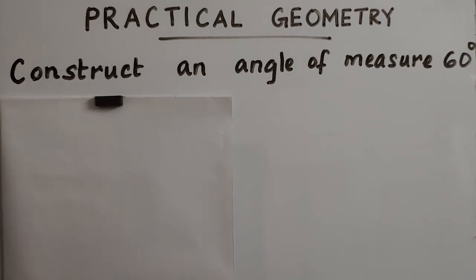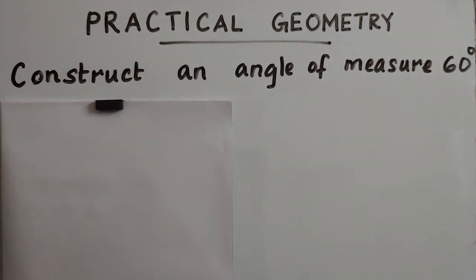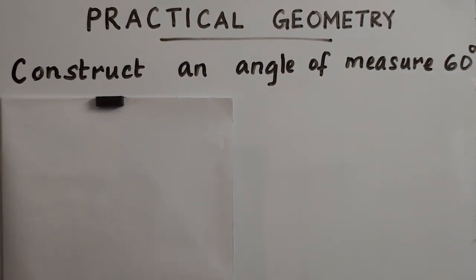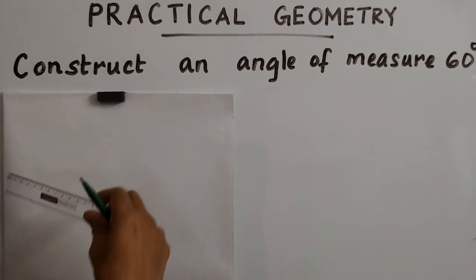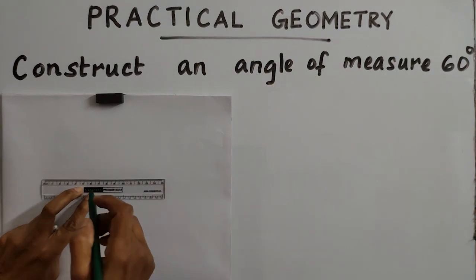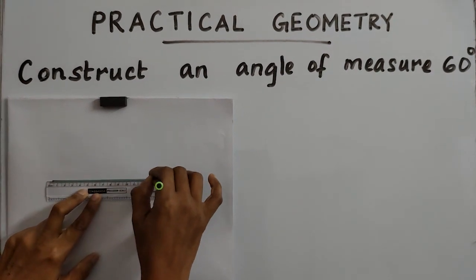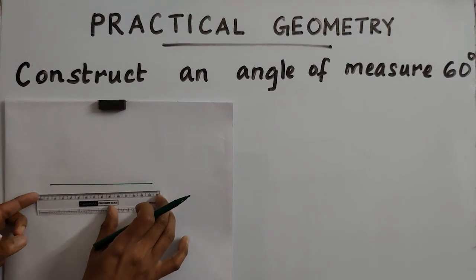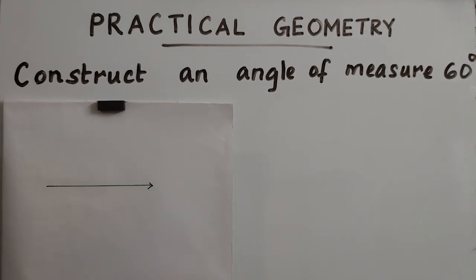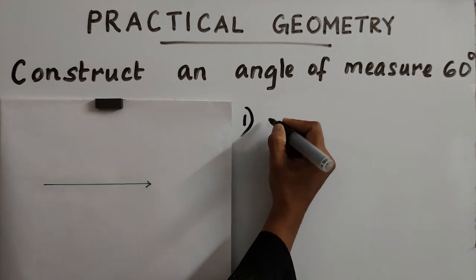Hi students, today we are going to study how to construct an angle of measure 60 degrees with the help of a compass. For that, first we have to draw a ray. A ray means it has only one endpoint. So the first step is to draw a ray.